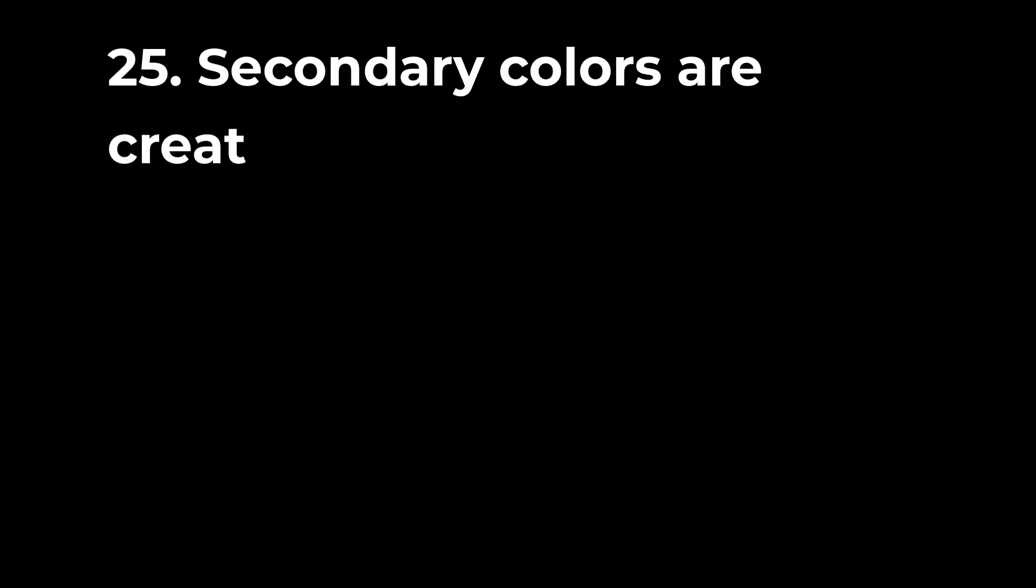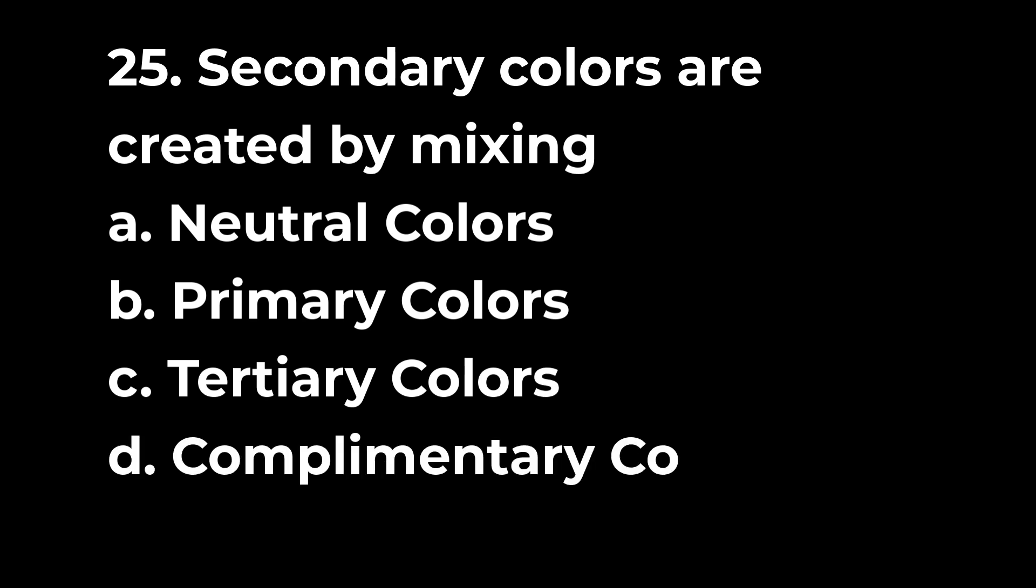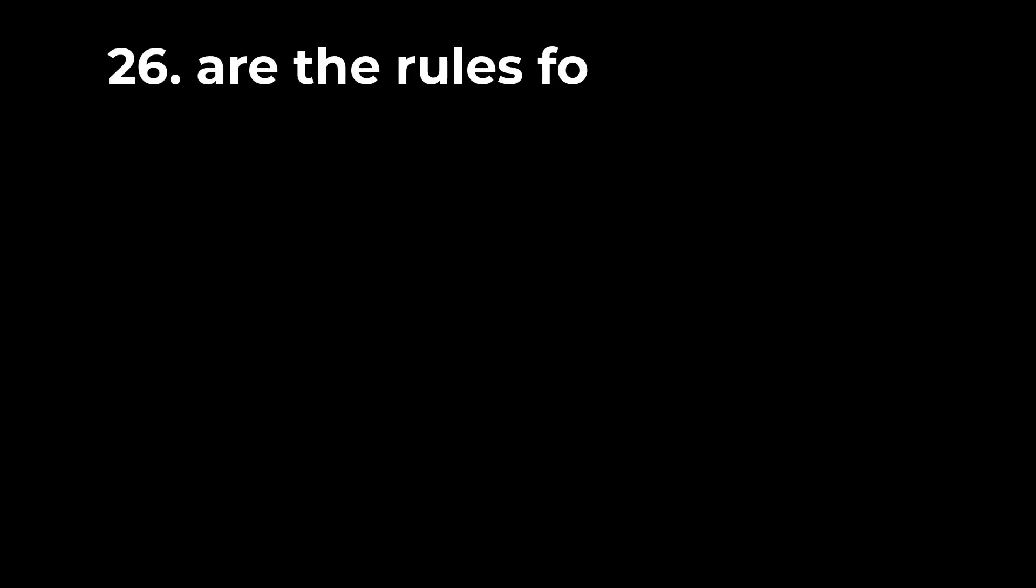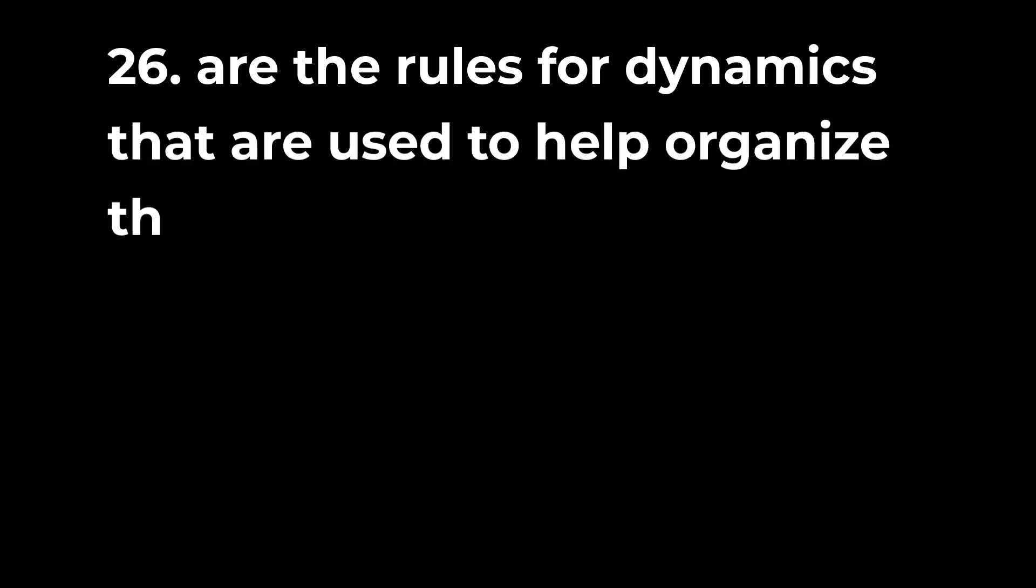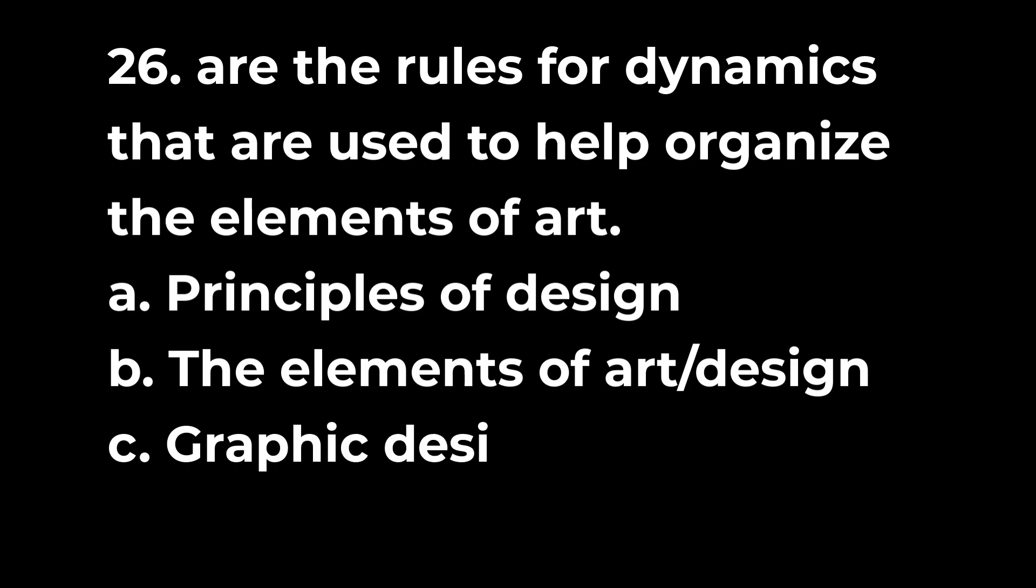Question 25: Secondary colors are created by mixing a. Neutral colors b. Primary colors c. Tertiary colors d. Complementary color. Question 26: Other rules for dynamics that are used to help organize the elements of art a. Principles of design b. The elements of art/design c. Graphic design d. Optical illusion.